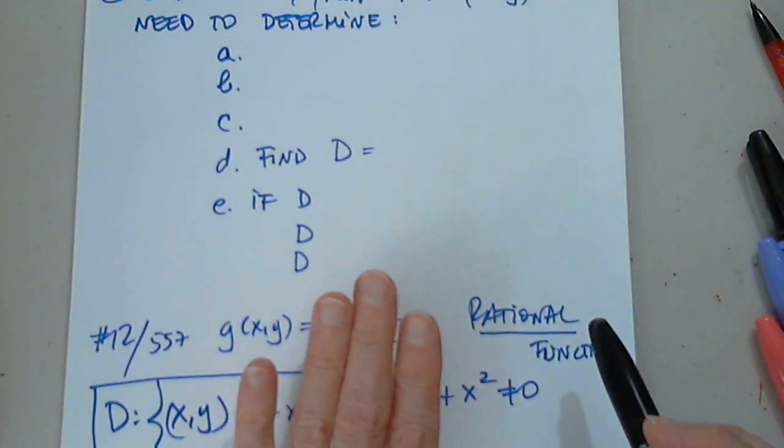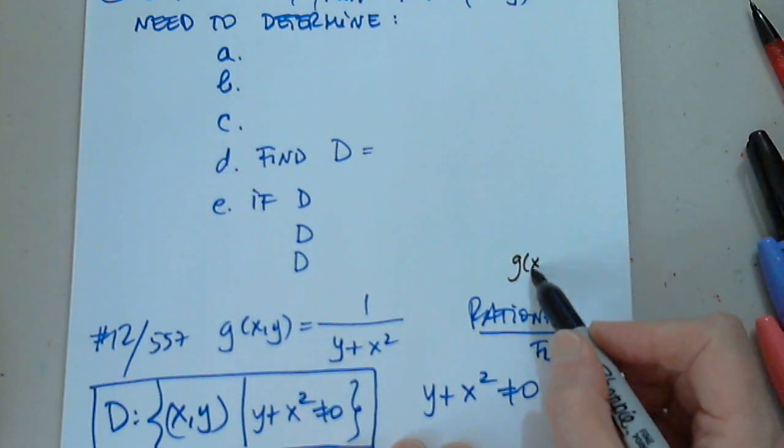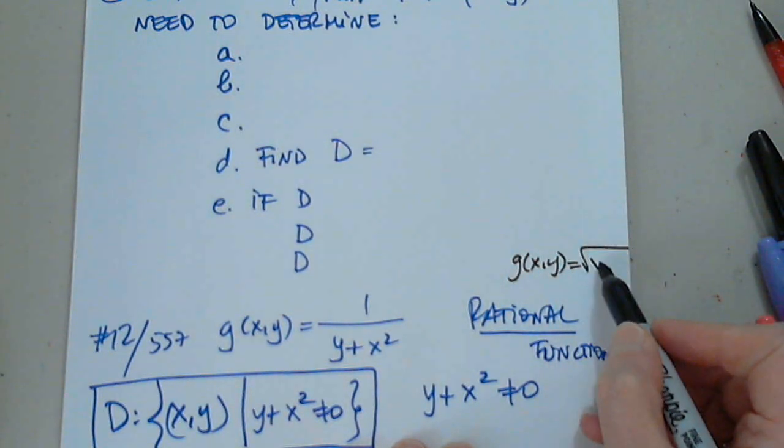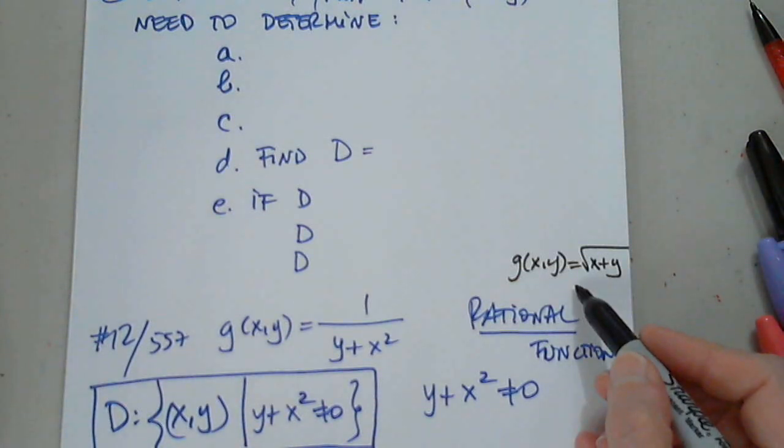That was the first step, right? So first I look at the function. If I have, let's say, g of x comma y equals the square root of x plus y, what would be the situation here? What would be the restriction in this case? What do I have to write for this one?